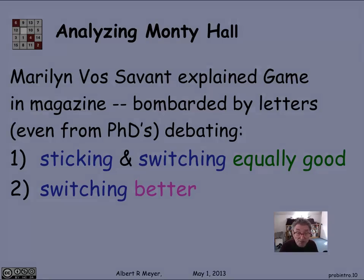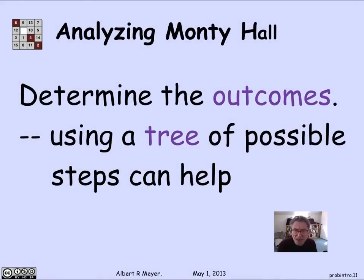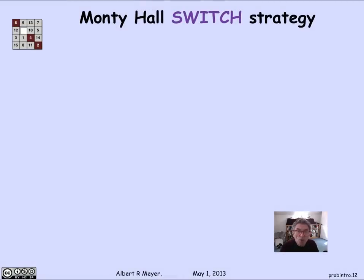The general method we're proposing for dealing with problems like this is to draw a tree that shows step by step the progress of the process or experiment that's going to yield a random output, and try to assign probabilities to each of the branches as you go. This is the guide for how to assign probabilities to outcomes. We're going to analyze the switch strategy: the contestant picks a door, Carol opens a door showing a goat, and the contestant switches to the non-goat closed door they did not originally pick.